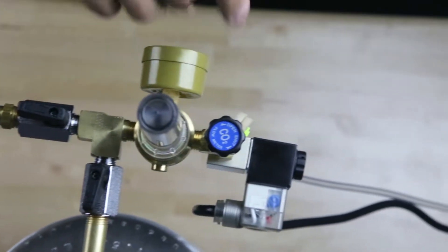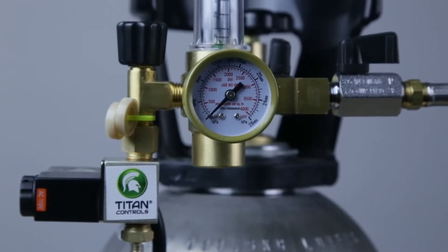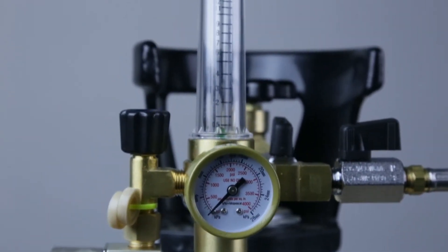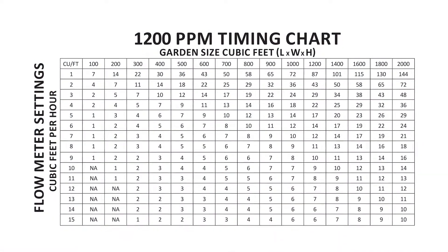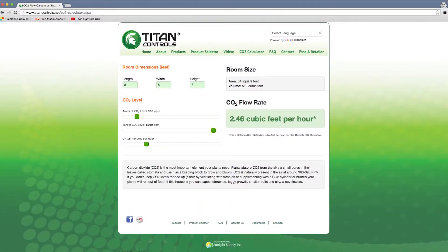To set the flow rate, turn the flow adjustment knob. The green ball will move up and down inside the flow meter. Check the 1200 ppm timing chart included with your instructions or on the Titan Controls website to determine appropriate flow and timing for your grow space.